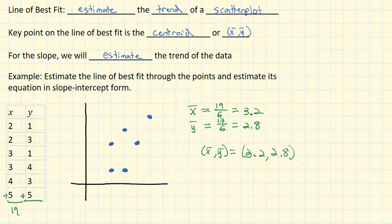And so our centroid, x bar y bar, is equal to 3.2 comma 2.8. That's going to be our main point for the line of best fit. The line of best fit has to go through 3.2, 2.8. This is why the centroid is so important.